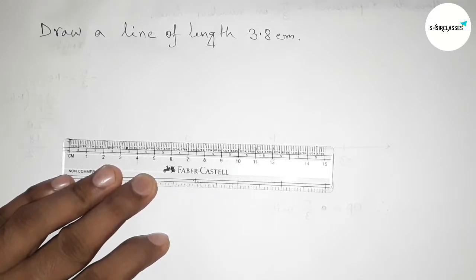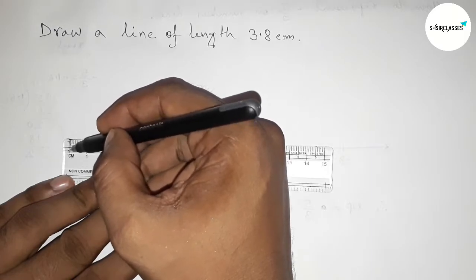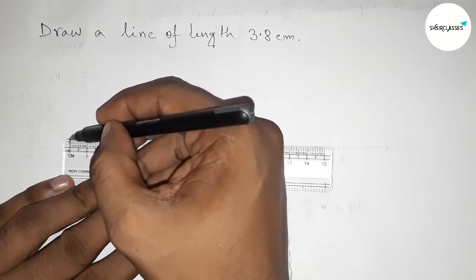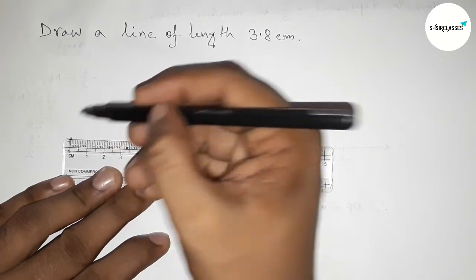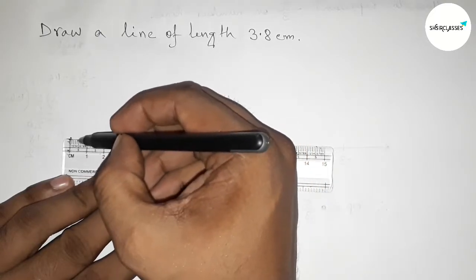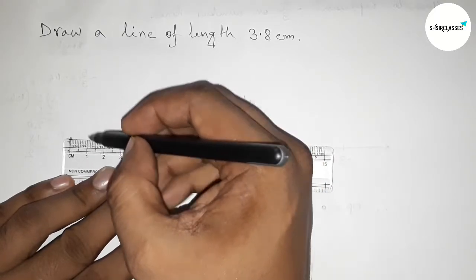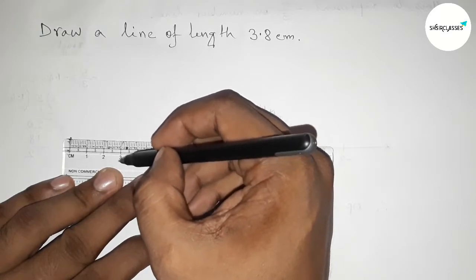So this is the starting, this is starting zero, so first marking here. Next counting 3.8 centimeter. So this is 0, 1 centimeter, and this is 2 centimeter, this is 3 centimeter.